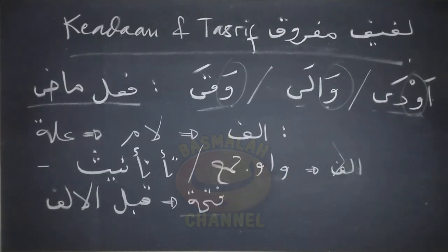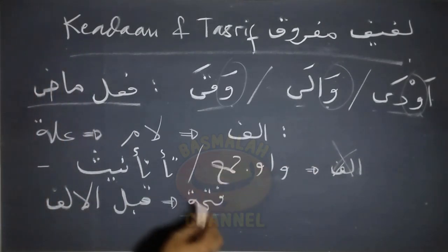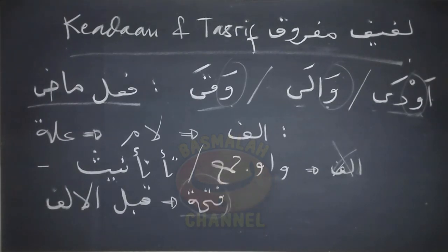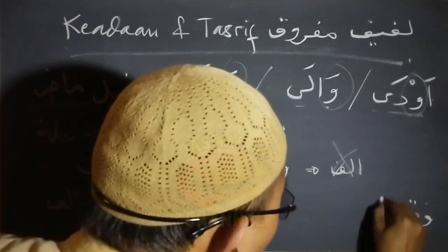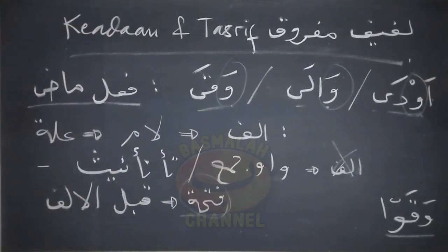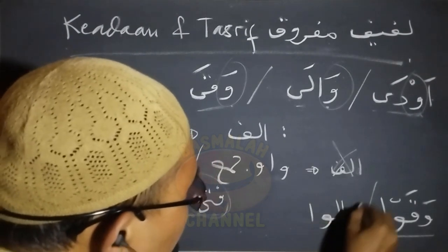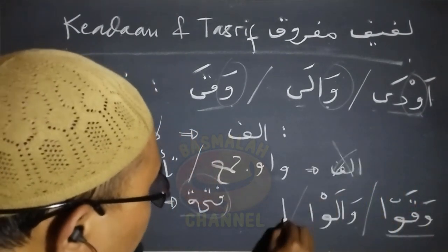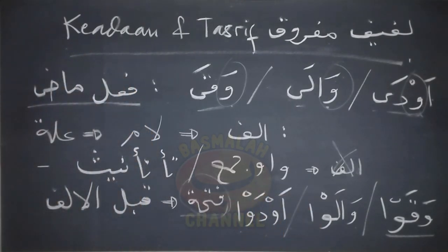Selanjutnya manakala bersambung dengan waw jamak, prosesnya sama dengan ketika bersambung dengan ta' ta'nis, yaitu huruf alifnya di sini dibuang dan huruf sebelum alif, yaitu qablal alif, di sini harkatnya ditetapkan dengan harkat fatha. Selanjutnya tinggal ditambah dengan waw jamak, sehingga wakaw maka akan menjadi wakaw. Selanjutnya wala akan menjadi walaw, kemudian auda akan menjadi audaw.